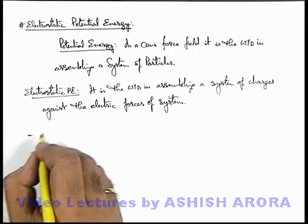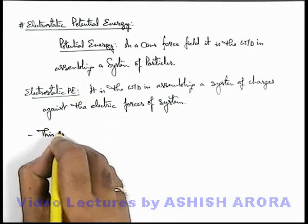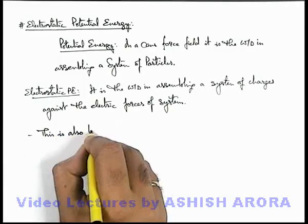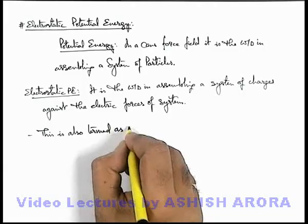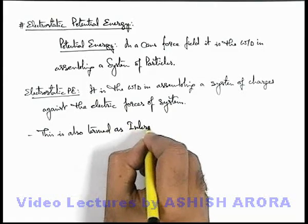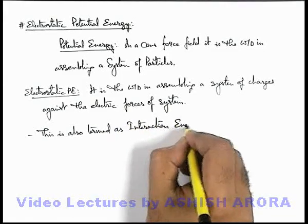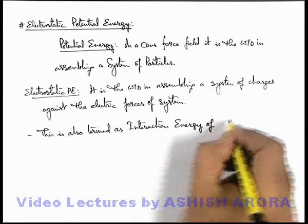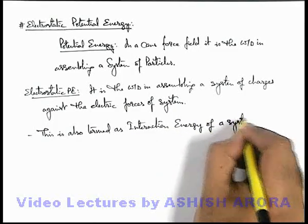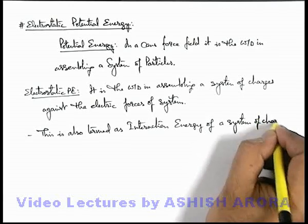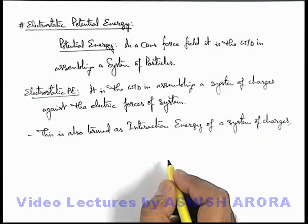About this electrostatic potential energy, we can also say that it is termed as interaction energy of a system of charges, because it is basically the work done against the interaction forces of the charges.